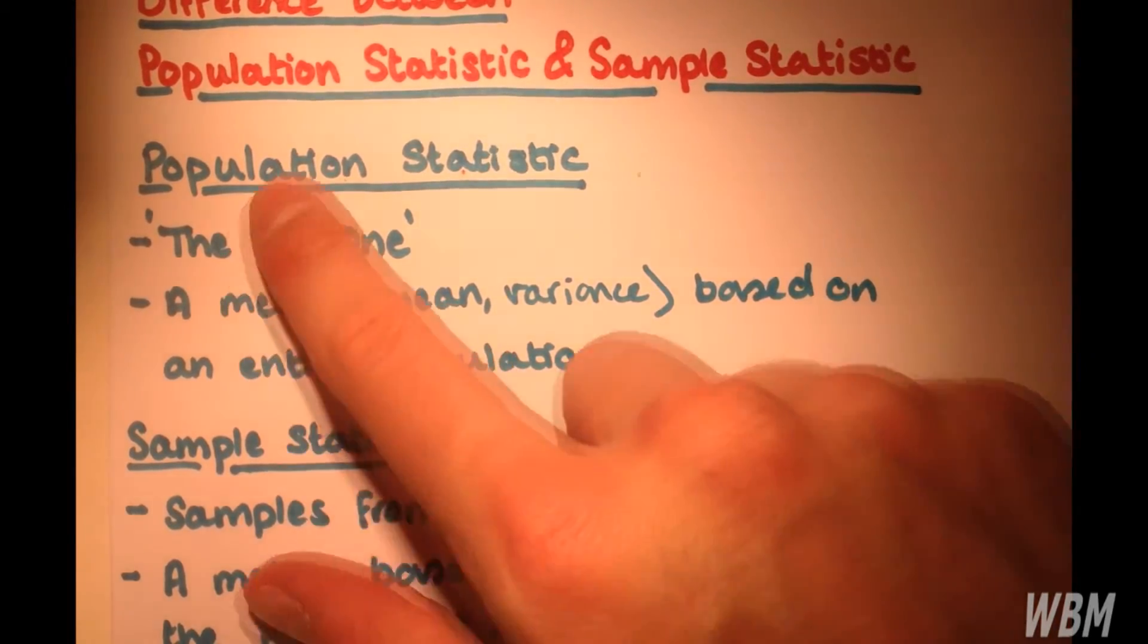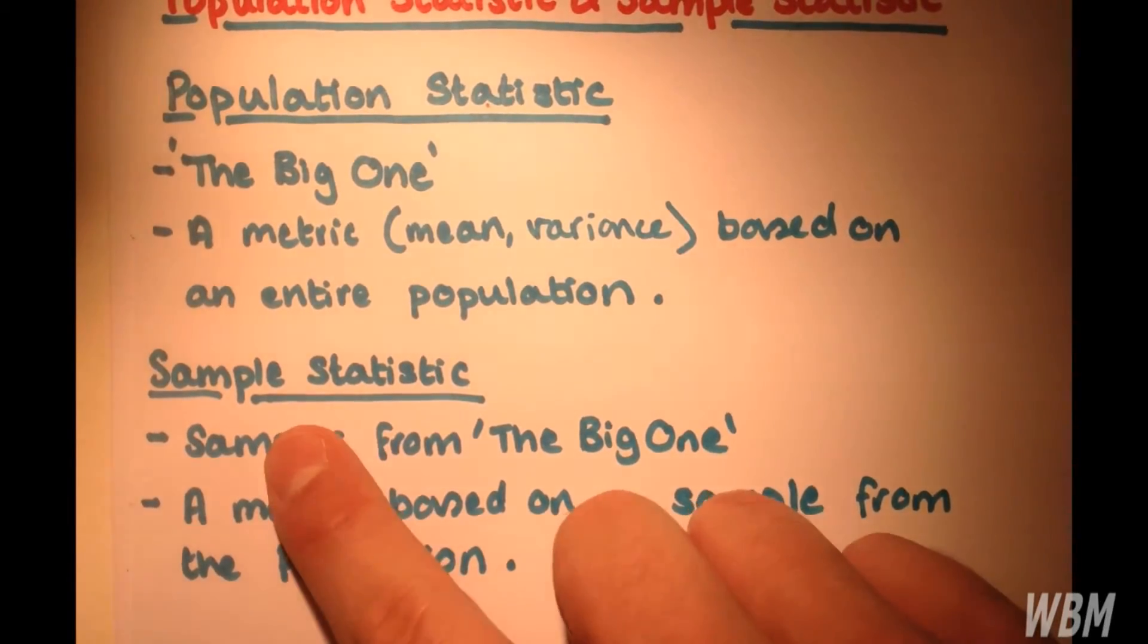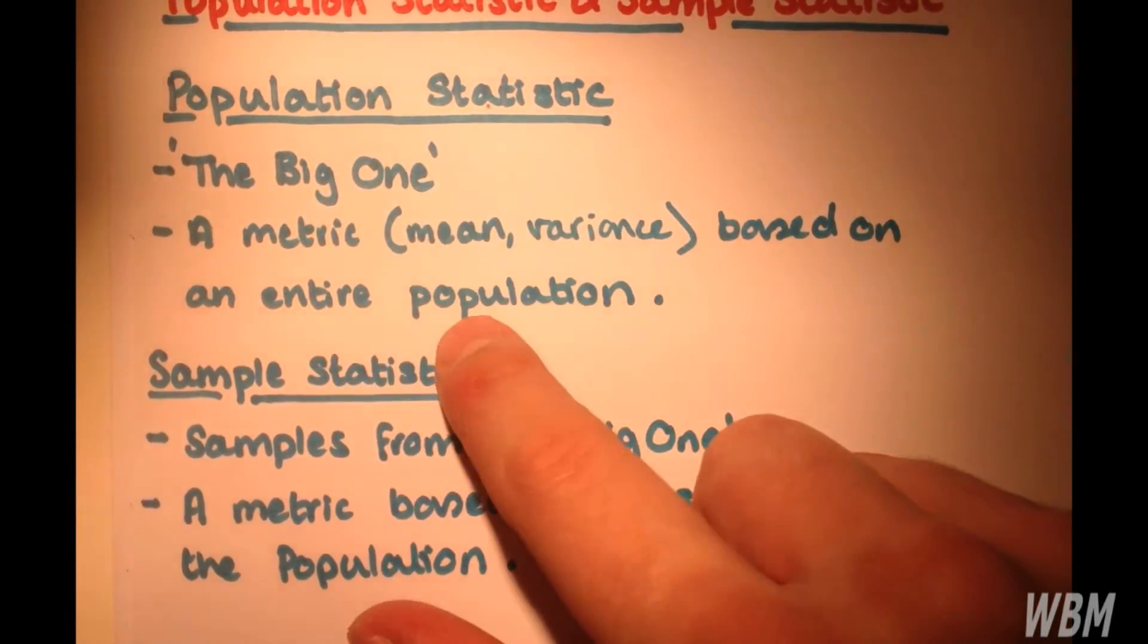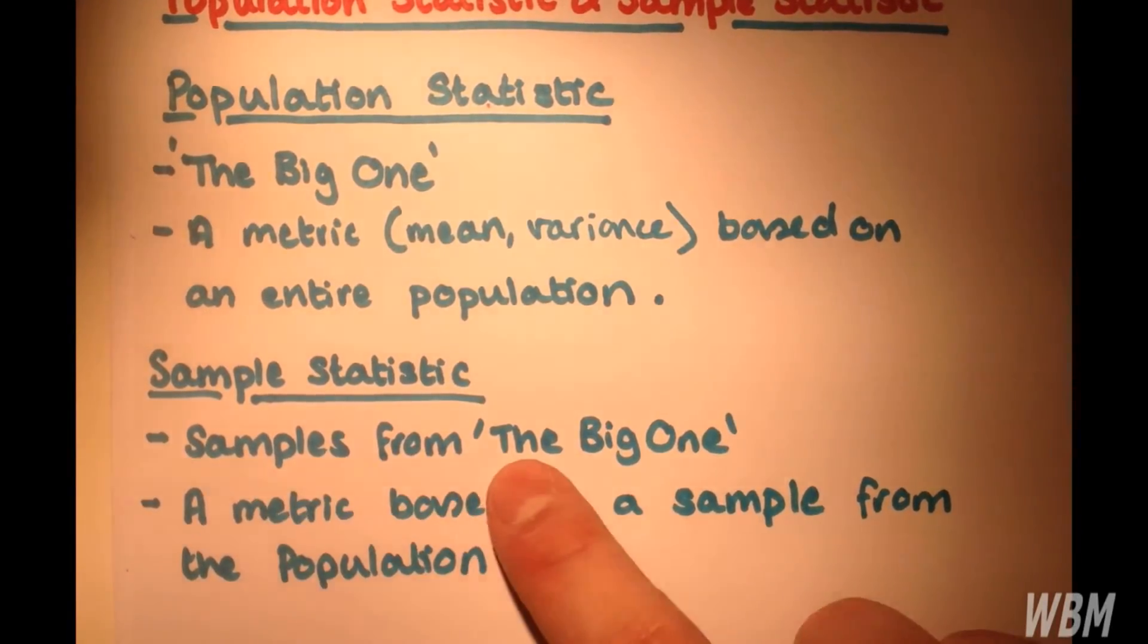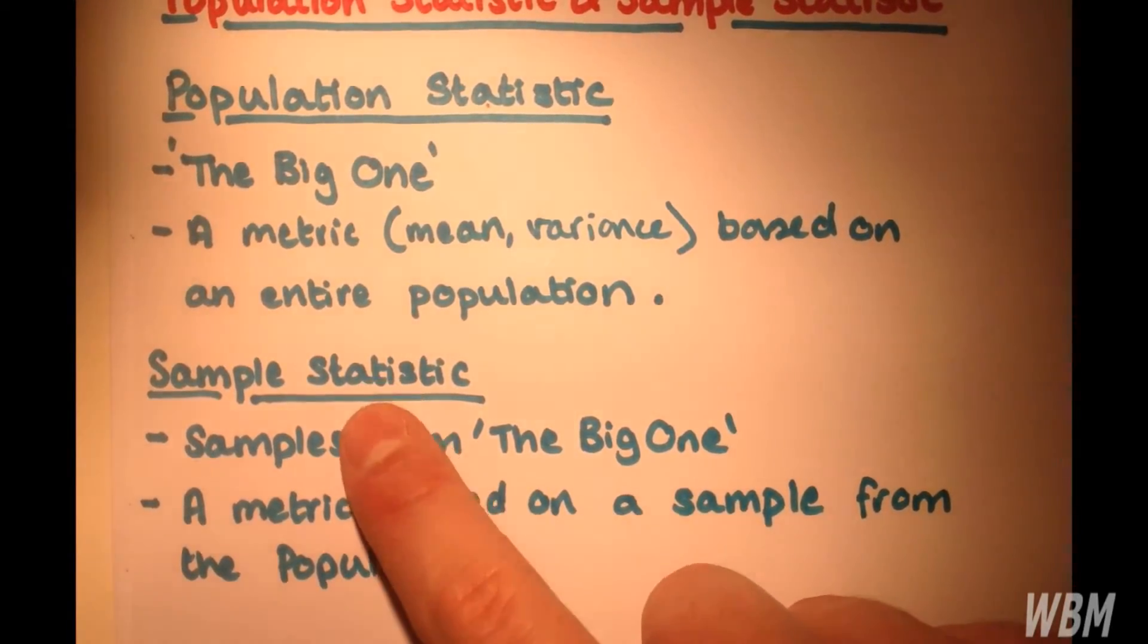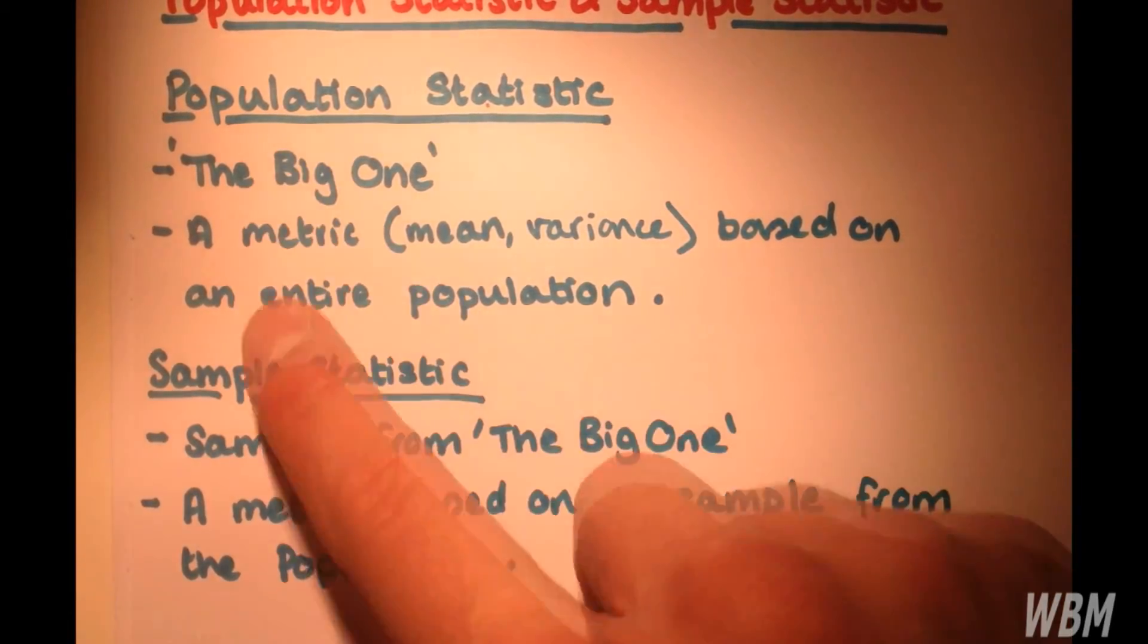So the mean of the entire sample. Now a sample statistic - okay, so a sample is just a section of the population. So I have samples from the big one, and then a statistic is simply a metric based on the sample we take from here.